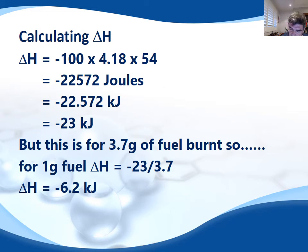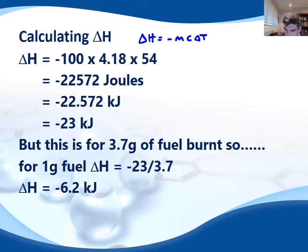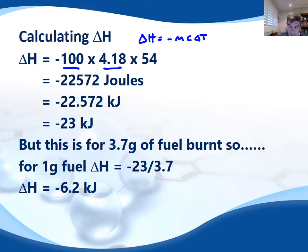So if delta H = MCdeltaT, then the mass is the 100 grams of water, C is 4.18 — so this is M, this is C, and this is delta T.